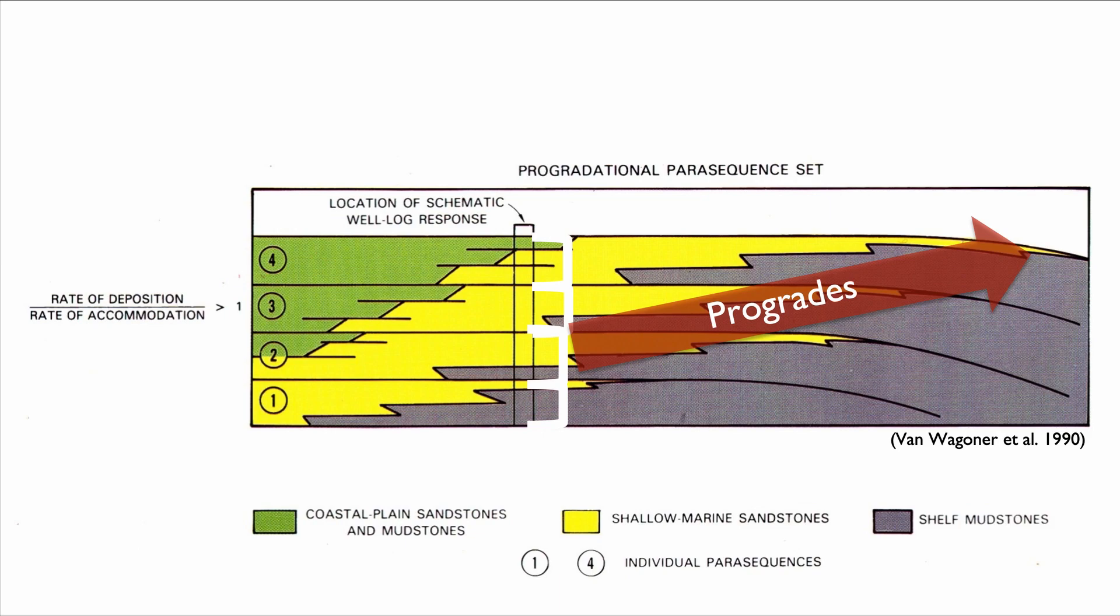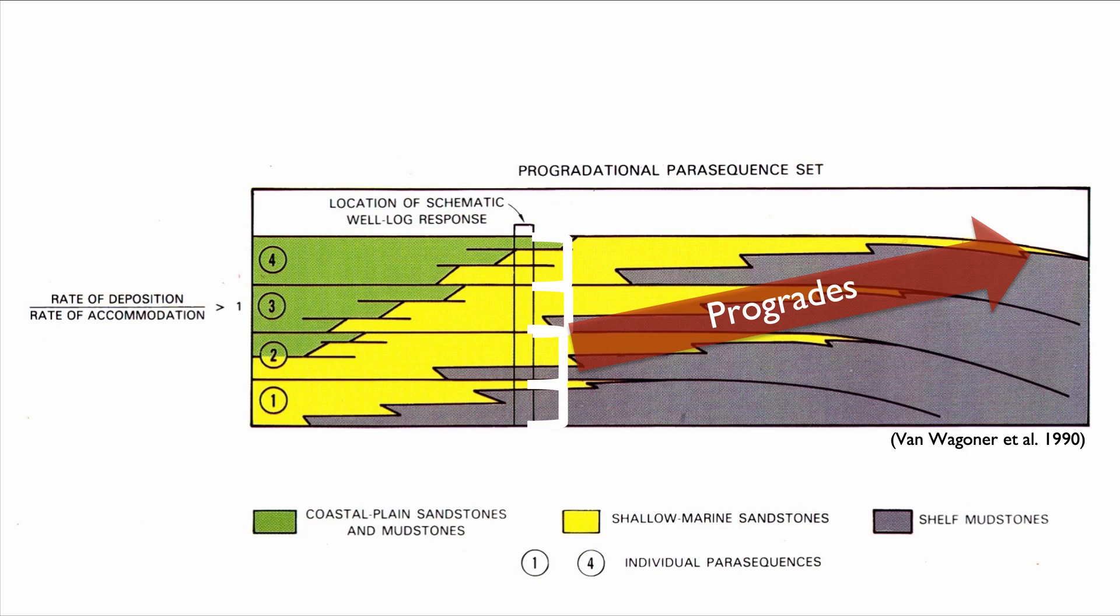Each parasequence represents the infilling of accommodation, but the stacking of these different parasequences indicates a much greater pattern, which is one of progradation. If you're in a progradational parasequence set, it implies that you're looking at something that is probably either an HST or an LST, depending on where you are and the facies that you find.